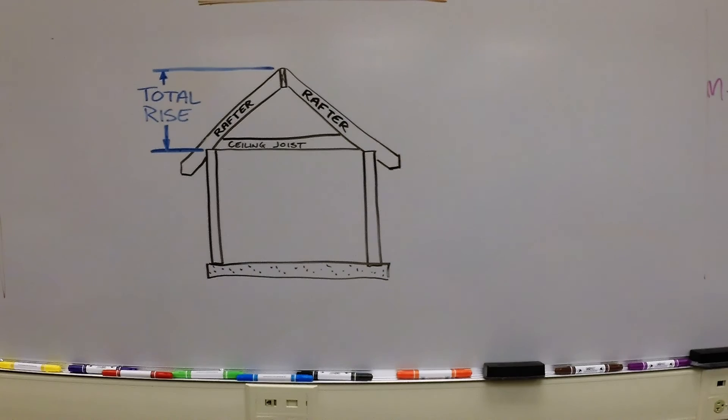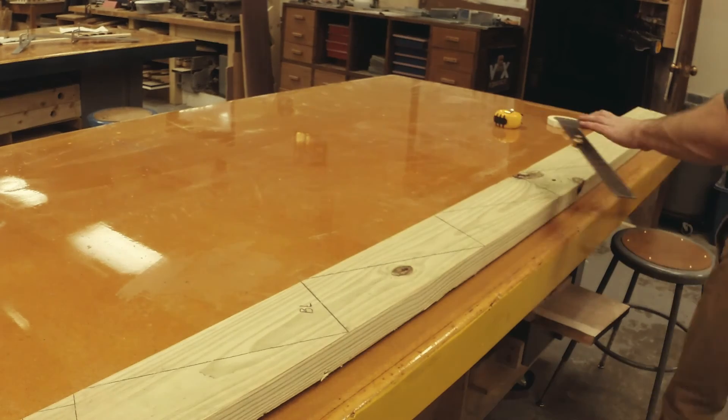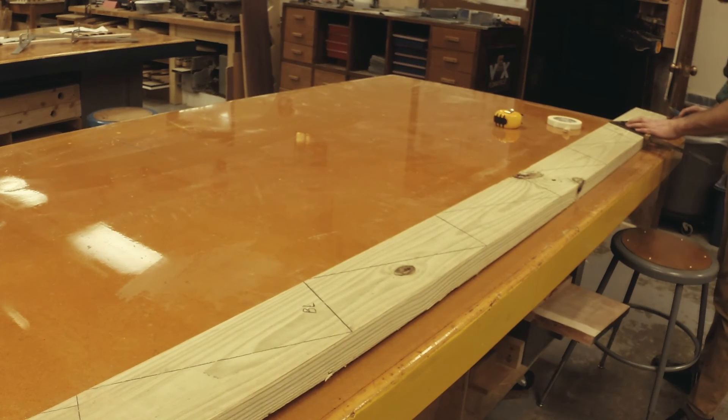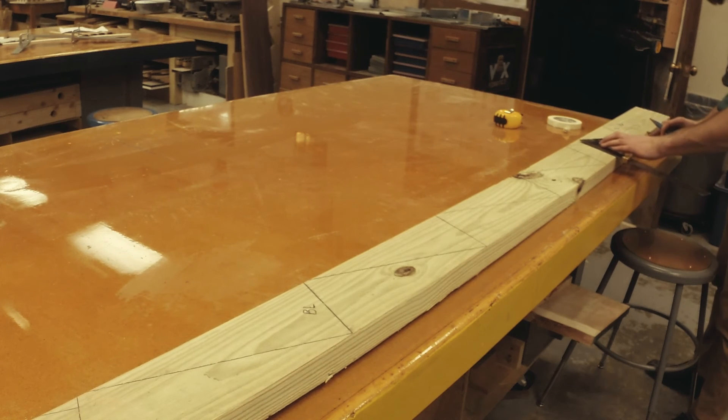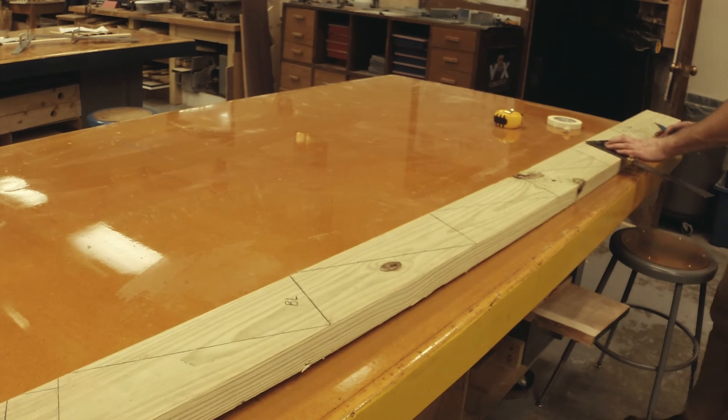This is where the total rise comes in handy. I can return to the top of my ridge line, which again marks the peak of my roof, and then measure vertically down using the increments on the tongue of my square.